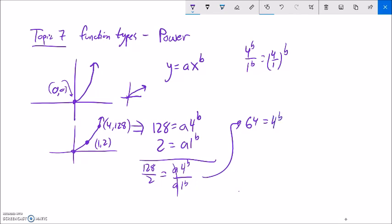So 4 to what power gives you 64? So what you could do is grab your calculator, hunt and peck a little bit until you see that b is equal to 3. But if you don't see that, rewrite this as a logarithm. So log base 4 of 64 is b.